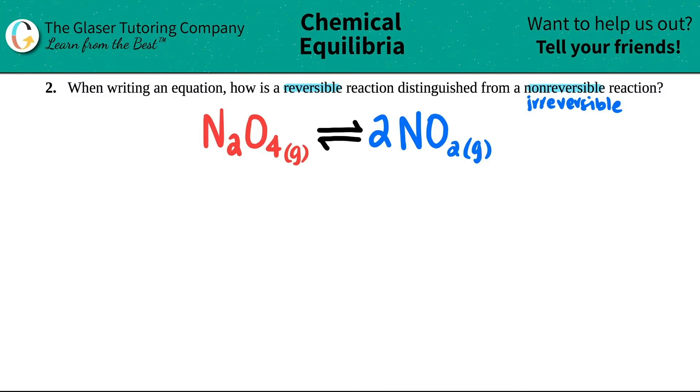But now the question is, how can we tell a reversible reaction from an irreversible reaction? Well, in number one, we basically talked about what an irreversible reaction was and what a non-reversible or irreversible versus a reversible reaction is.